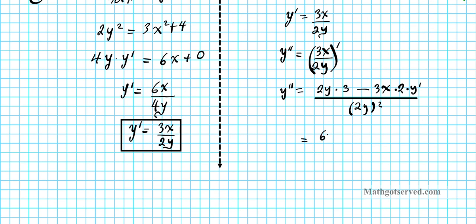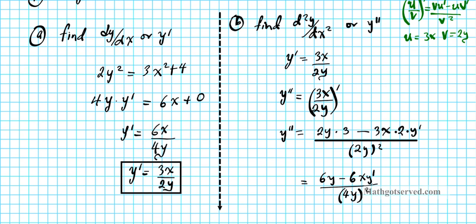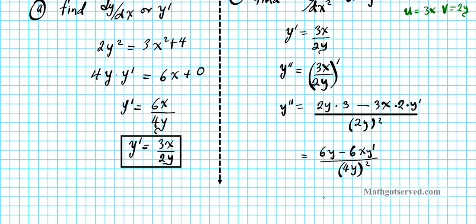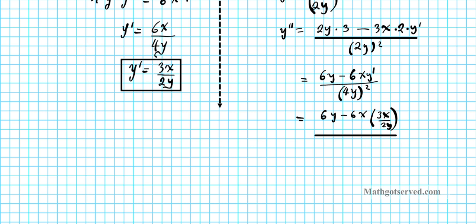Simplifying gives 6y minus 6x·y′ all over 4y². Now we can substitute for y′ since we already know from part A that y prime equals 3x over 2y. Making that substitution, the numerator becomes 6y minus 6x times (3x over 2y).